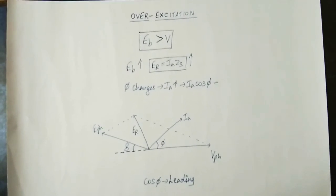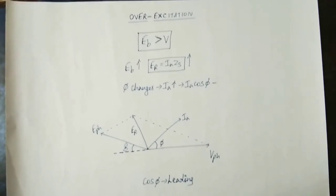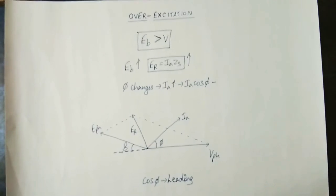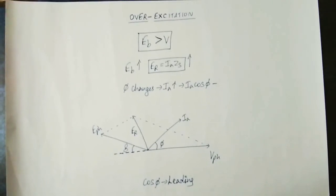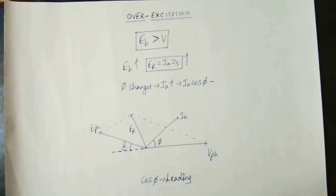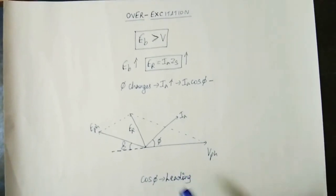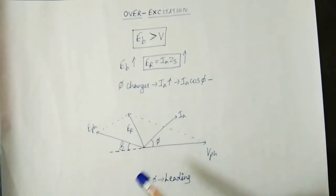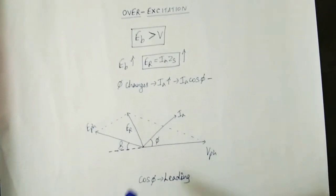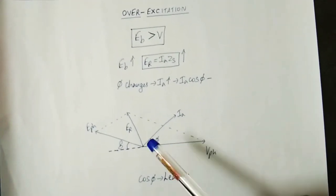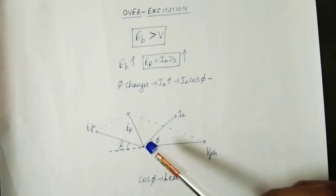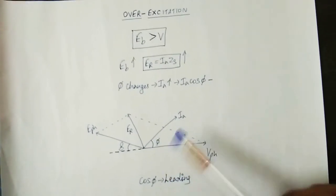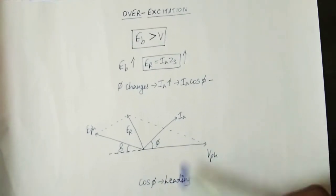If IA is increasing, there is more lagging and this is leading. This is VP phasor and EB phasor will extend. ER is increased. The IA is low and leading.